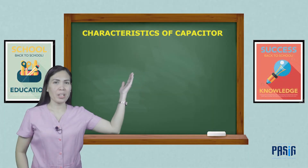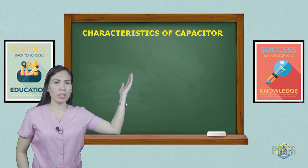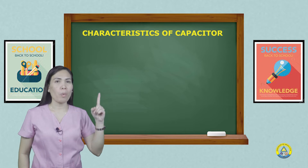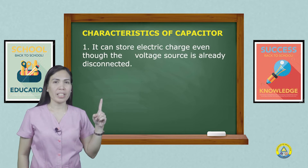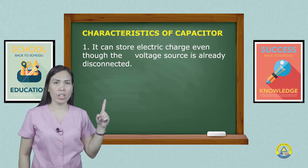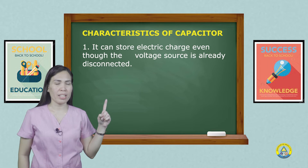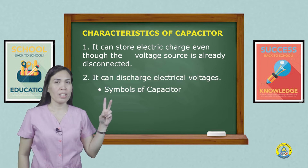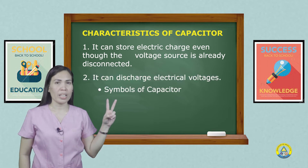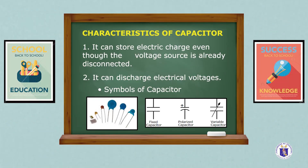Characteristics of a capacitor: One — it can store electric charge even though the voltage source is already disconnected. Two — it can discharge electrical voltage. These are the symbols of capacitors.